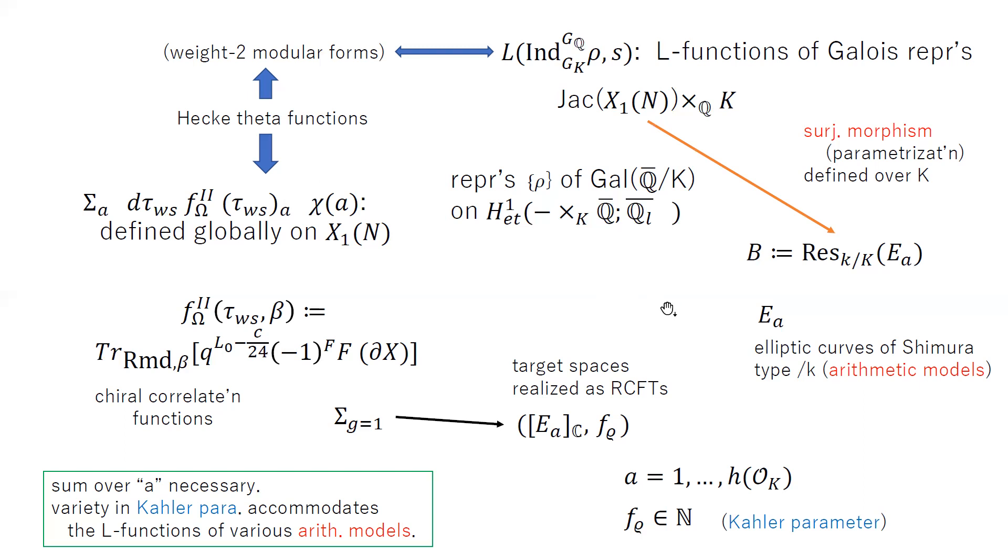One positive observation in that context is that the modular form that you have in the context of the Langland's correspondence, and also in the context of theory of modular parameterization, is known to be the pullback of holomorphic forms on the target space, pulled back by the surjective map to those elliptic curves, to the modular curves.